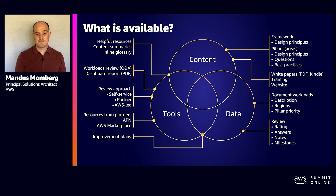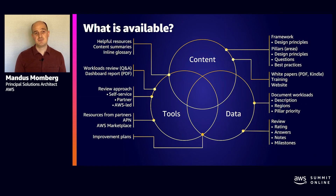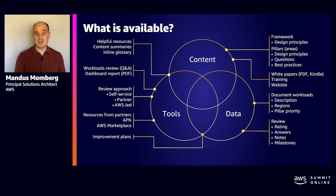Then we have data. Data is the information that you have from doing the reviews and using the interactive tools that we have. This data is key to providing those metrics that allow you to decide whether you truly are well-architected or not. It allows you to measure this in your monitoring and auditing systems, and provides detailed prescriptive guidance of what it looks like to achieve a successful, well-architected environment. In each of these three categories, we have multiple assets and content types that are all built to facilitate your ability to learn what a well-architected workload on AWS looks like.